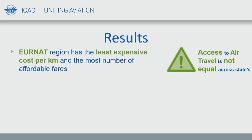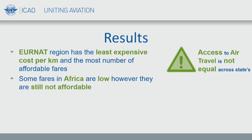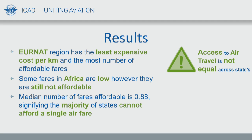Looking at results, we separated all states into regions to understand which were more affordable. Unsurprisingly, the European region had the least expensive airfares and the most fares purchasable. Interestingly, Africa — specifically East Africa — had the third least expensive airfare among all seven regions. This tells us that even though airfares can be inexpensive, they're not necessarily affordable, since those states still couldn't afford a fraction of the airfare. The median number of fares affordable across states is 0.88, meaning the majority of states lie below one fare — there is not currently equal access to airfares globally.